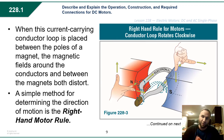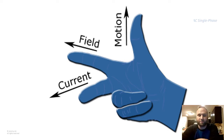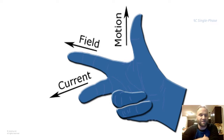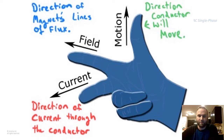The simplest way using the electron flow theory to determine the direction of motion is the right-hand motor rule, based on the electron flow theory. Your thumb indicates the direction the loop is going to want to move or rotate. Your pointer finger faces the magnetic field of the two magnetic poles north-to-south. Your middle finger indicates the direction that current — or electrons — is flowing through the loop. So: direction the conductor will move, direction of the magnetic lines of flux, and direction of electron flow through the conductor.